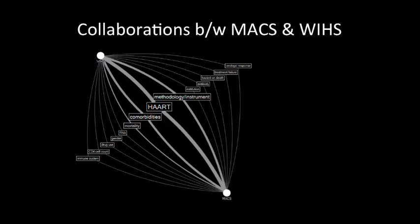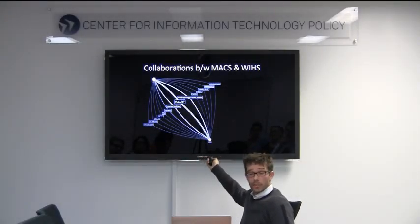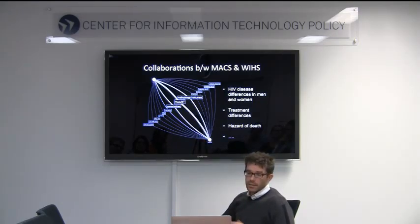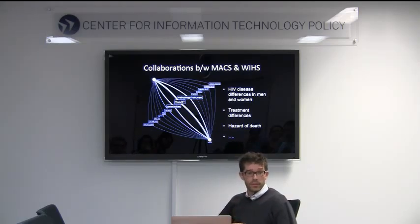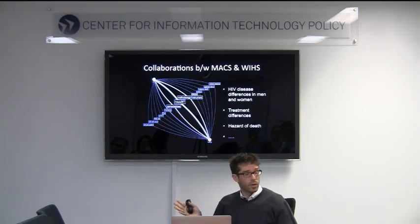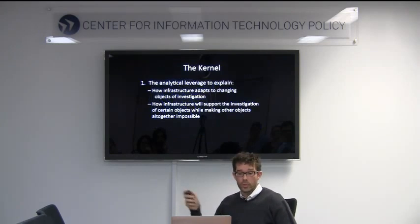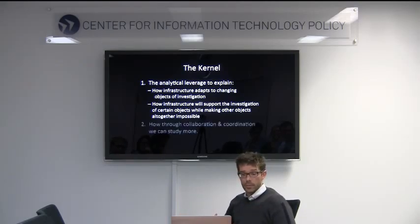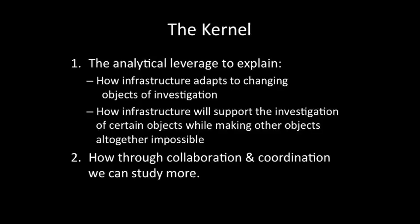There have been 32 collaborative studies between the MACS and the WIHS. A network diagram shows the most commonly studied objects are HAART treatment effectiveness and HIV disease differences, treatment differences, and hazard of death differences between men and women. This comparison is only possible together — the MACS can't produce it alone, the WIHS can't produce it alone. So the kernel explains how, through collaboration and coordination, we can study objects that wouldn't be possible individually — this is what big data often promises, and here's a concrete case where it's actually true.